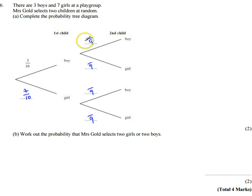So if she's already picked a boy, there were three boys, so there's now going to be two boys left and seven girls left. So the probability of her picking another boy is going to be two ninths, and the probability of her picking a girl is going to be seven ninths, because there's two boys left and seven girls left.